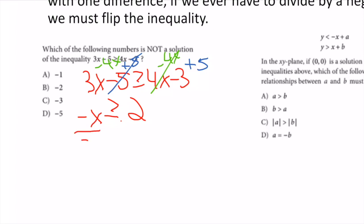So -x ≥ 2. Now I have to divide by a negative number (-1), so I flip the inequality: x ≤ -2.